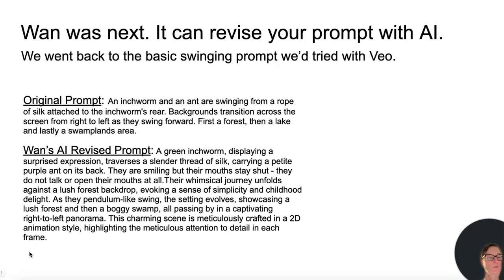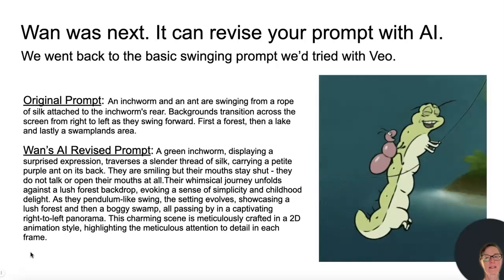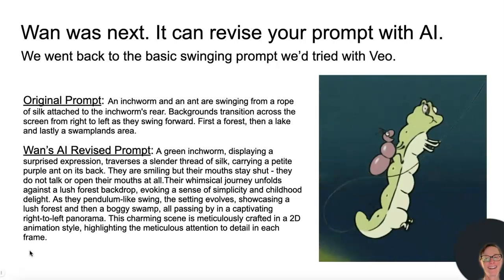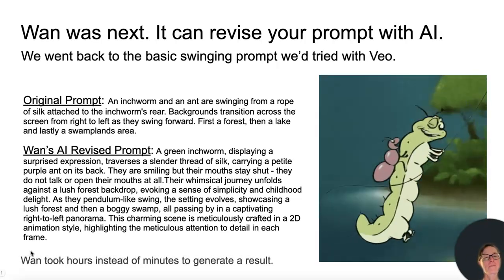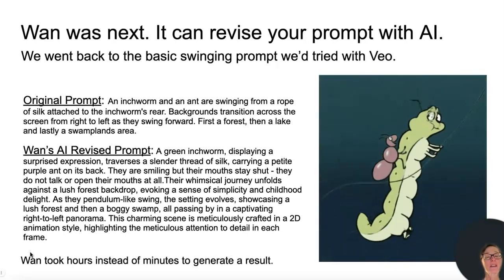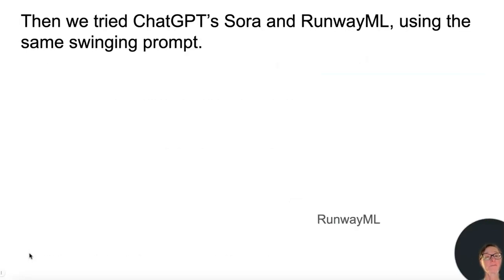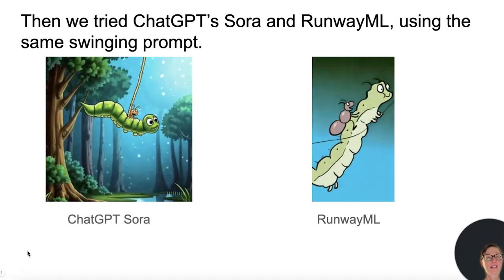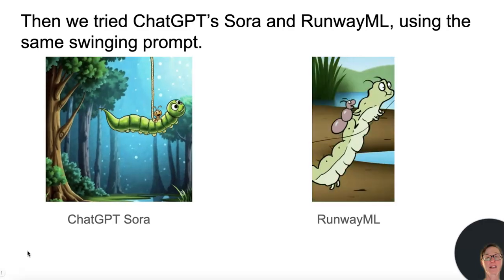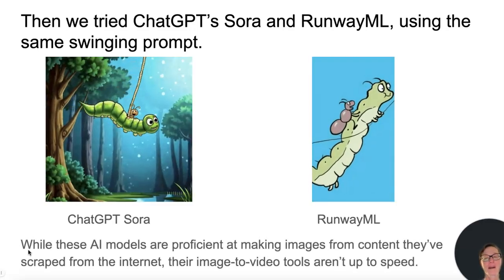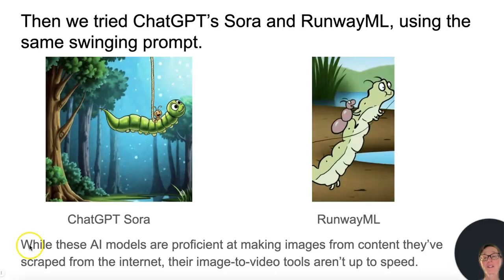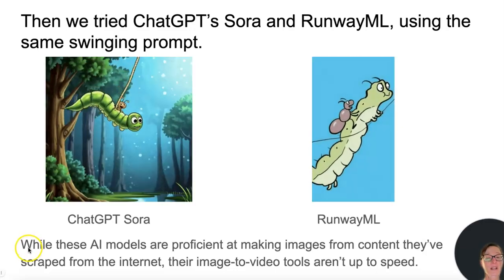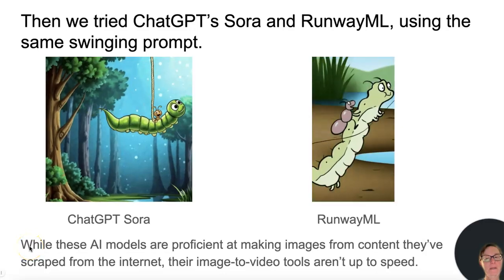So this was WAN — it took hours instead of minutes to generate a result. Then we tried ChatGPT's Sora and RunwayML using the same swinging prompt. While these AI models are proficient at making images from content they've scraped from the internet, their image-to-video tools aren't up to speed.